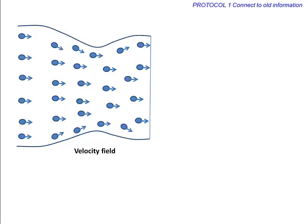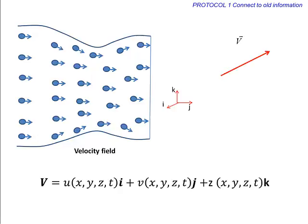A velocity field can be mathematically represented as a function of space variables and time. Let u, v, and w be scalar functions that give scalar components of a given velocity vector.